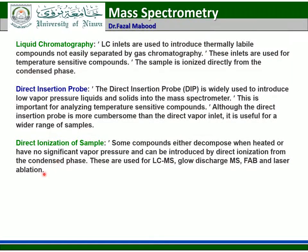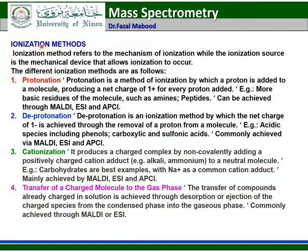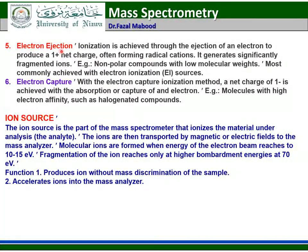Ionization methods refer to the mechanism of ionization, while the ionization source is the mechanical device that allows ionization to occur. There are different mechanisms of ionization: protonation, deprotonation, cationization, transfer of a charge molecule to the gas phase, electron ejection, and electron capture. The ion source is the part of the mass spectrometer that ionizes the material under analysis, and the ions are then transported by magnetic or electric fields to the mass analyzer.